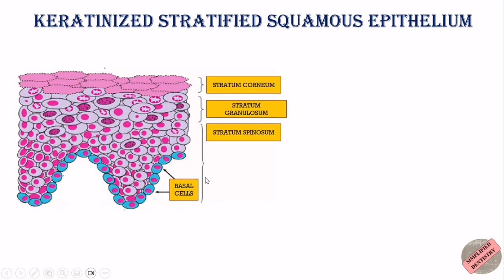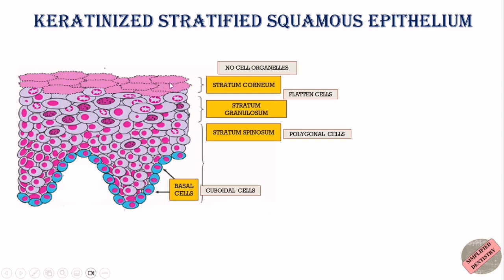These layers have their names from their different morphologic appearance. The basal layer is made up of cuboidal cells, whereas the spinous layer is made up of polygonal cells. The granular cell layer and the corneal layer are both made up of flattened cells, but the cells in the corneal layer are devoid of almost all organelles. A single cell present in the basal layer at different times becomes a part of each layer, as the cells in the basal layer have two options after mitosis.